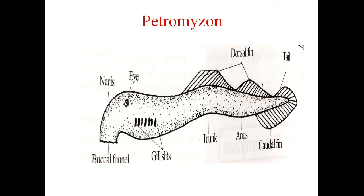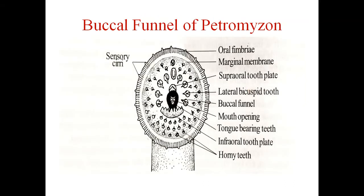You can see in the diagram the buccal funnel, gill slits, eye, trunk, anus, caudal fin, and the first and second dorsal fins. In the close-up of the buccal funnel, the marginal membrane is comprised of oral fimbriae. At the center is the mouth opening, with an infraoral tooth plate below the mouth and a superoral tooth plate above. The entire inner surface of the buccal funnel is covered with horny teeth, and there are also sensory papillae.